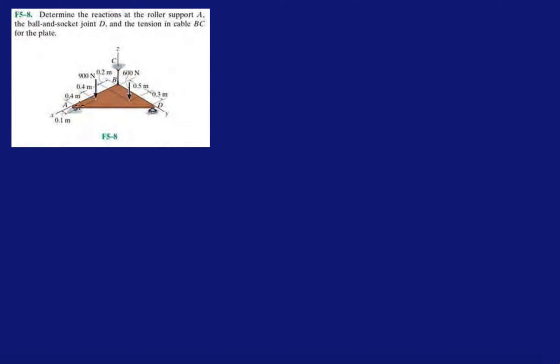Here we have a roller support at A, so we know the roller support has one reaction force going normal to its surface, which we'll call AZ. The roller is allowed to slide around the XY plane, so that's why it doesn't have any reactions in the X or the Y.